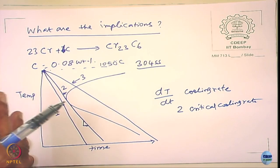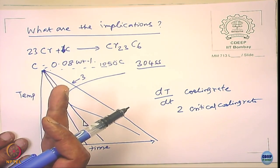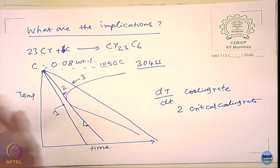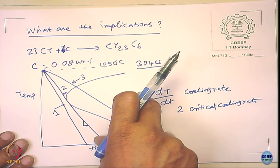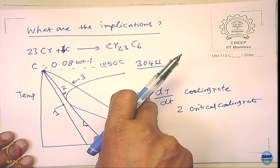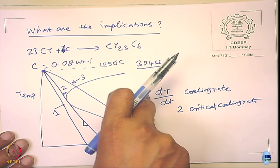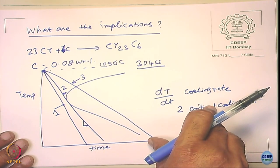The temperature and time are both important. When I said the sensitization range is between 450 and 850°C, please understand — someone might ask: can it happen at 430°C? Yes, it could, because time and temperature are equally important. These numbers are indicative and also depend upon the alloy — it is not the same for all kinds of alloys.